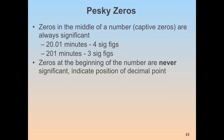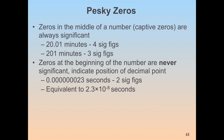Zeros at the beginning of a number — leading zeros — are never significant because they only indicate the position of the decimal point; they're simply placeholder zeros. So 0.00000000023 seconds has only two sig figs, since all those leading zeros are just holding the place for the 23. Equivalently, we can write this as 2.3 × 10⁻⁸ seconds — still just two sig figs.